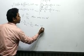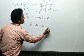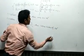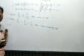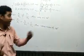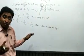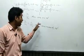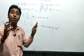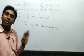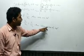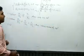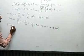Then there are an infinite number of solutions — infinitely many values of x and y satisfy both equations simultaneously.